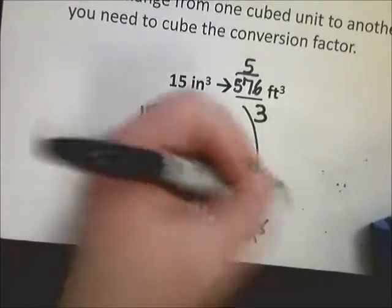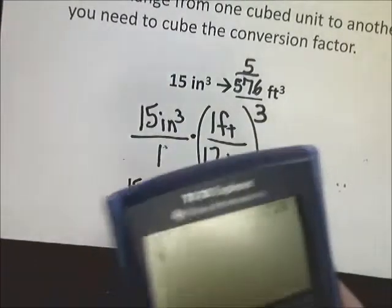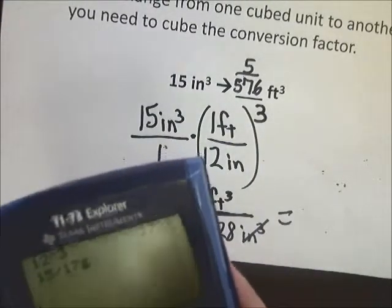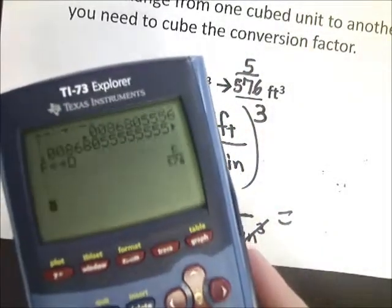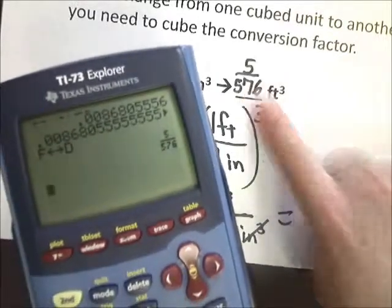Now that I have that, the inches cancel out, and I'm left with 15 divided by 1728. I get that weird thing again. Seem familiar? Fraction decimal, 5 over 576, just like it says.